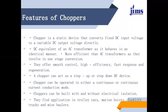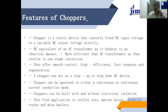First we are discussing about the features of the chopper. A chopper is a static device that converts fixed DC input voltage to a variable DC output voltage directly. It is called a DC chopper, often referred to like an AC transformer as it behaves in an identical manner, but more efficient than an AC transformer as it involves only one stage conversion.